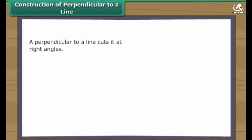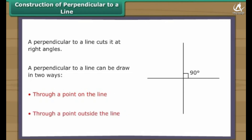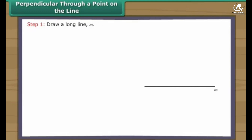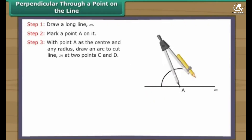Construction of perpendicular to a line. A perpendicular to a line cuts it at right angles. A perpendicular to a line can be drawn in two ways: through a point on the line, or through a point outside the line. Let us learn to construct perpendiculars in both ways. Perpendicular through a point on the line: draw a long line M. Mark a point A on it. With point A as the center and any radius, draw an arc to cut line M at two points C and D.